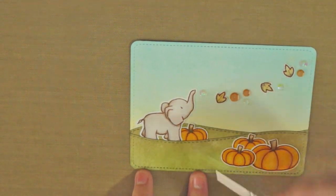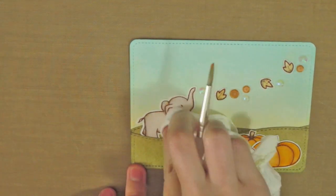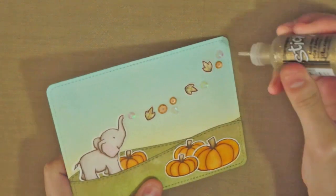Once I had all my leaves colored, I added a bit of warm lipstick diluted with water to the ear and cheek of the elephant, which I forgot when I colored it.